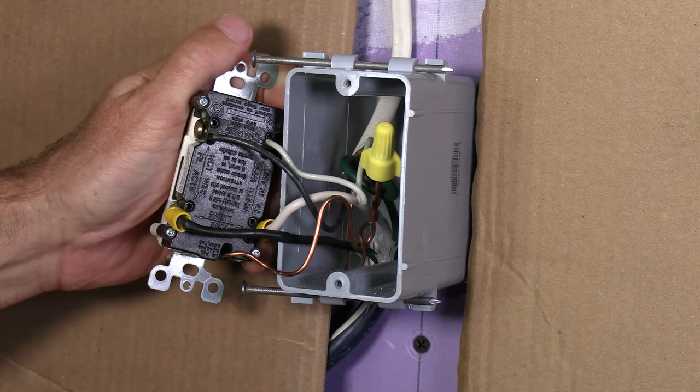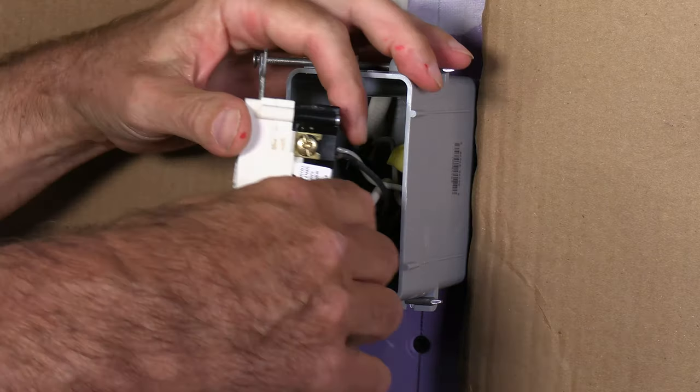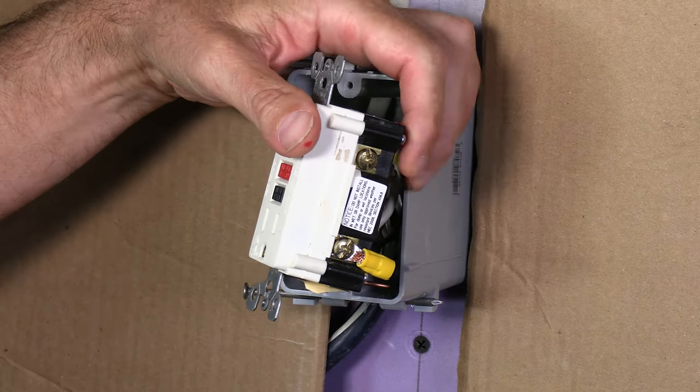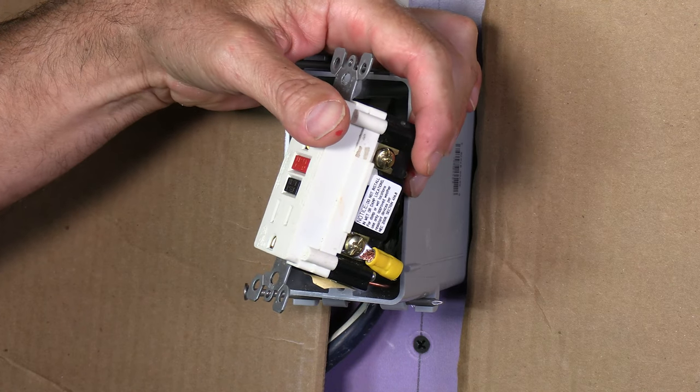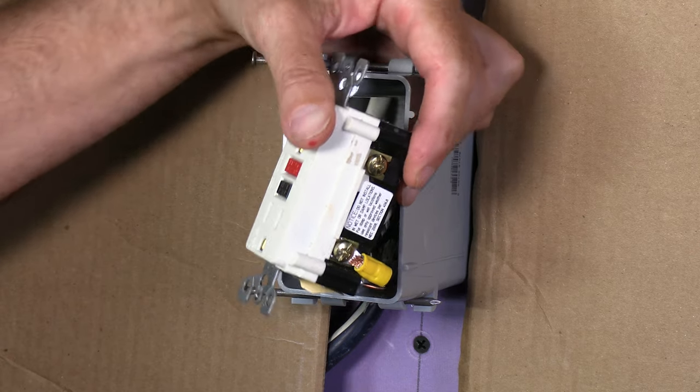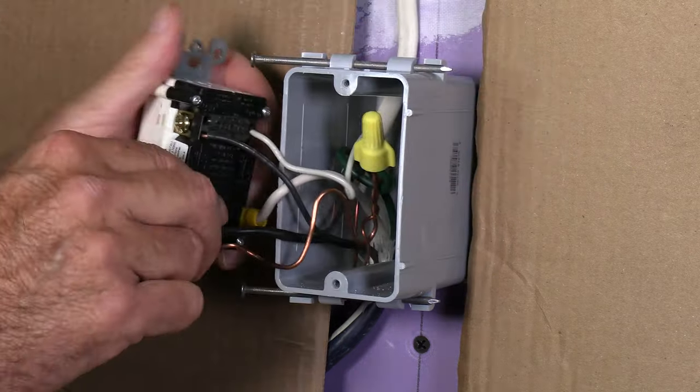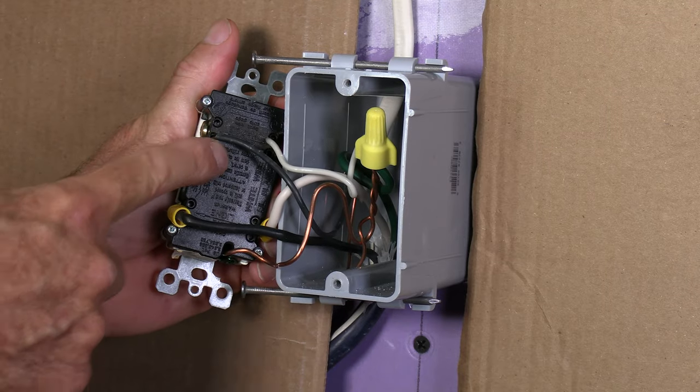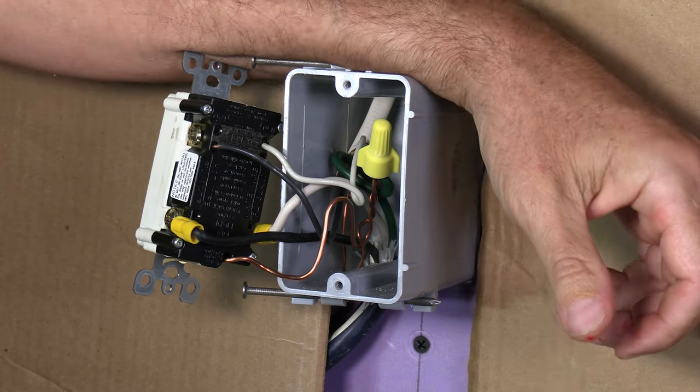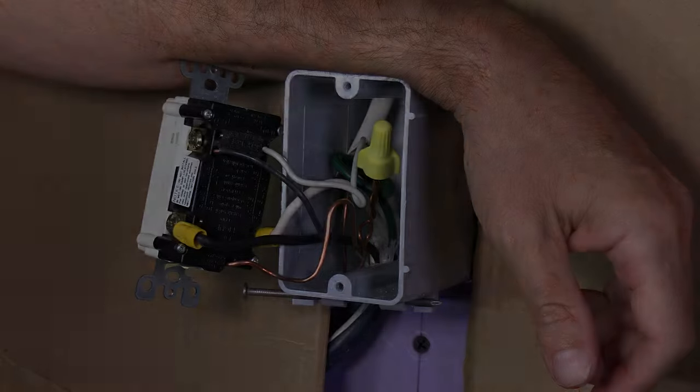There's not much else to it. One thing you do want to keep in mind is don't run GFIs in a daisy chain, hooking one GFI to another GFI to another GFI. You'll probably have problems with them tripping down the road every time it rains or gets wet. So keep that in mind. Put one GFI at the beginning of your run and the rest of the plugs that are hooked to the load will automatically be protected already. All right. So I hope this video has been helpful. If it has, please click that thumbs up and thank you for watching.